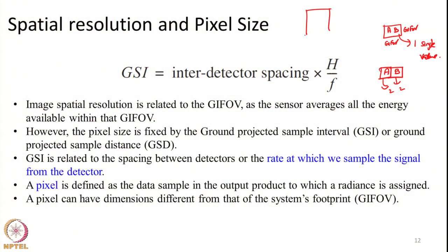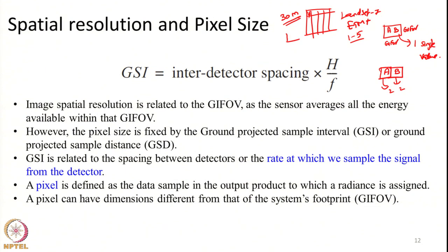The next concept is pixel size. Whenever we download a satellite image, it will say each pixel is 30 meters, 500 meters, and so on depending on the sensor. Each pixel in the image represents a certain area on the ground. For example, in a Landsat 7 ETM+ sensor for bands 1, 2, and 5, each pixel size is roughly 30 meters — that is, each pixel corresponds to a ground area of 30 m × 30 m, a square pixel.